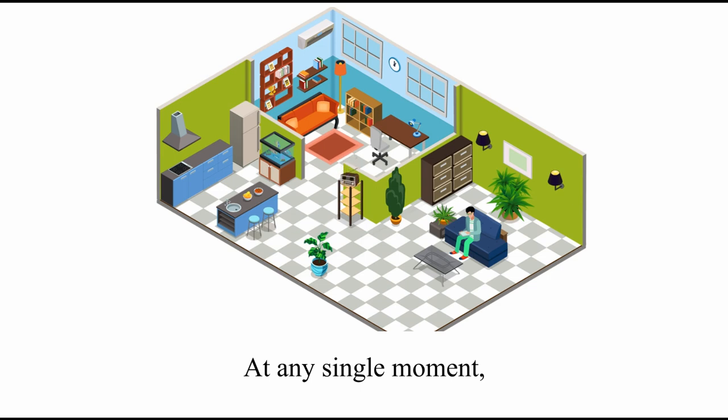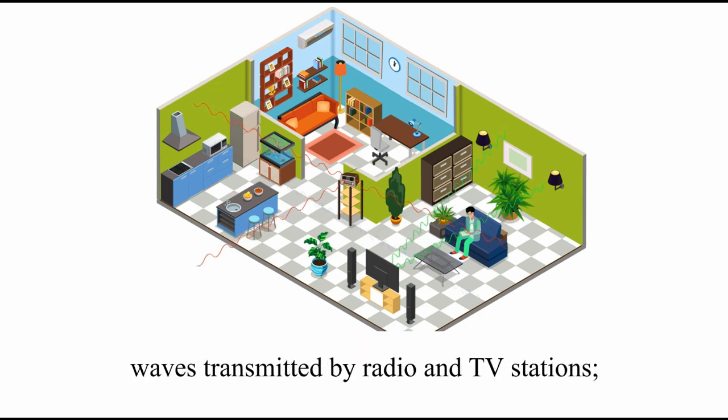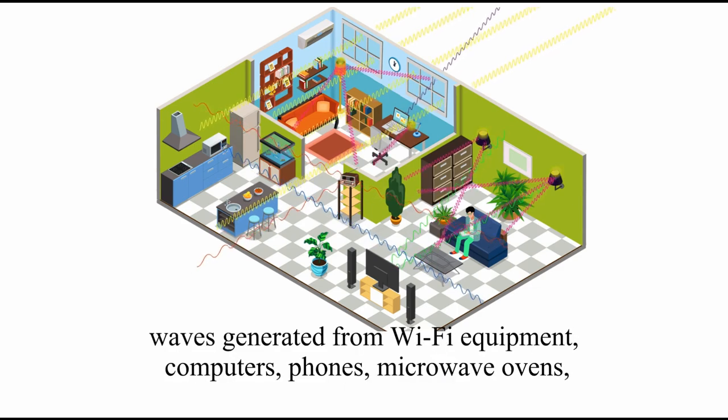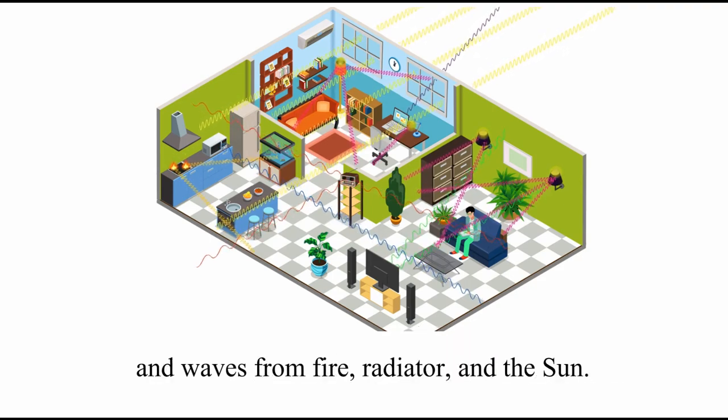At any single moment, we are surrounded with all kinds of electromagnetic waves, such as waves transmitted from radio and TV stations, waves generated from Wi-Fi equipment, computers, phones, microwave ovens, and waves from fire, radiators, and the sun.